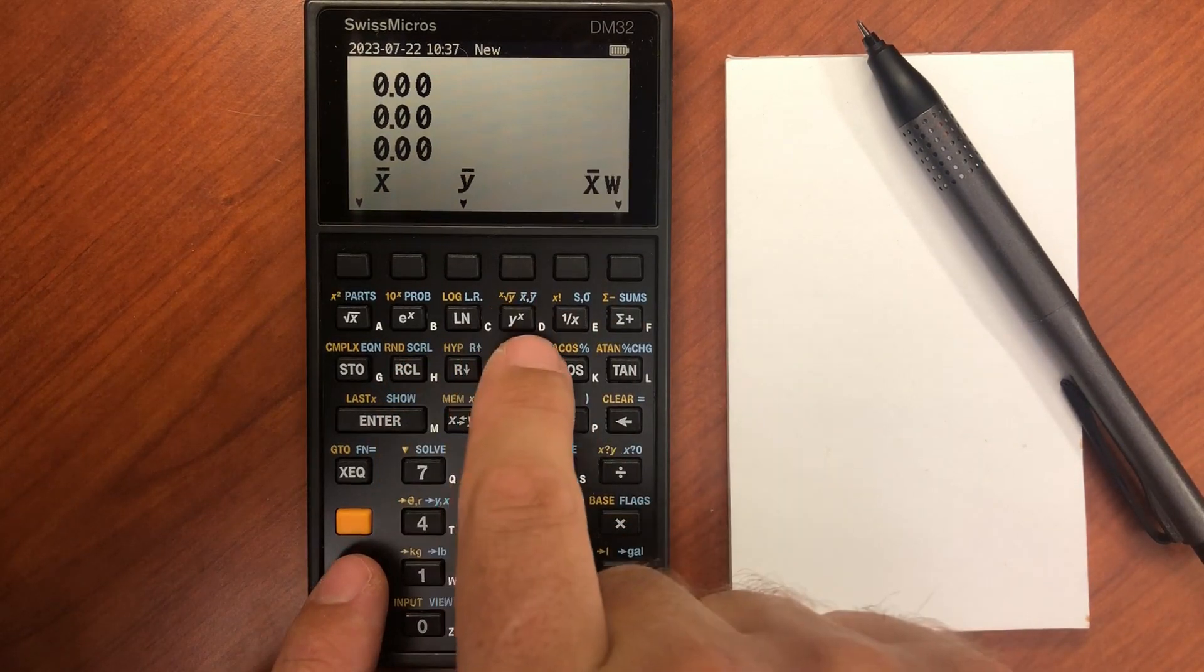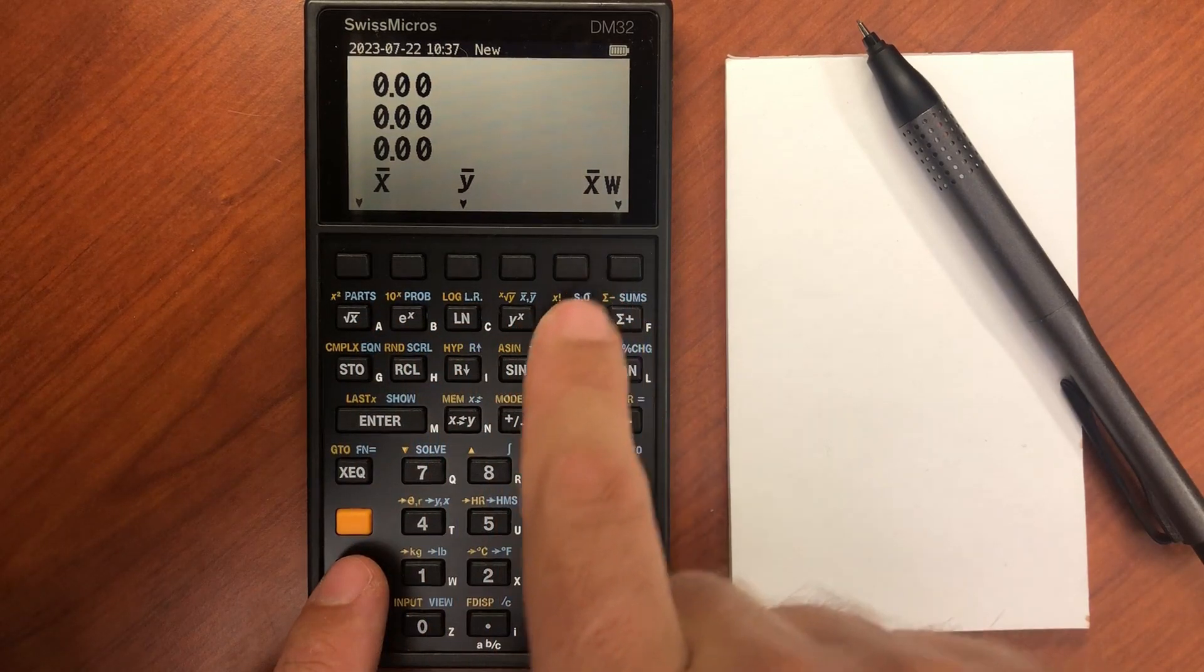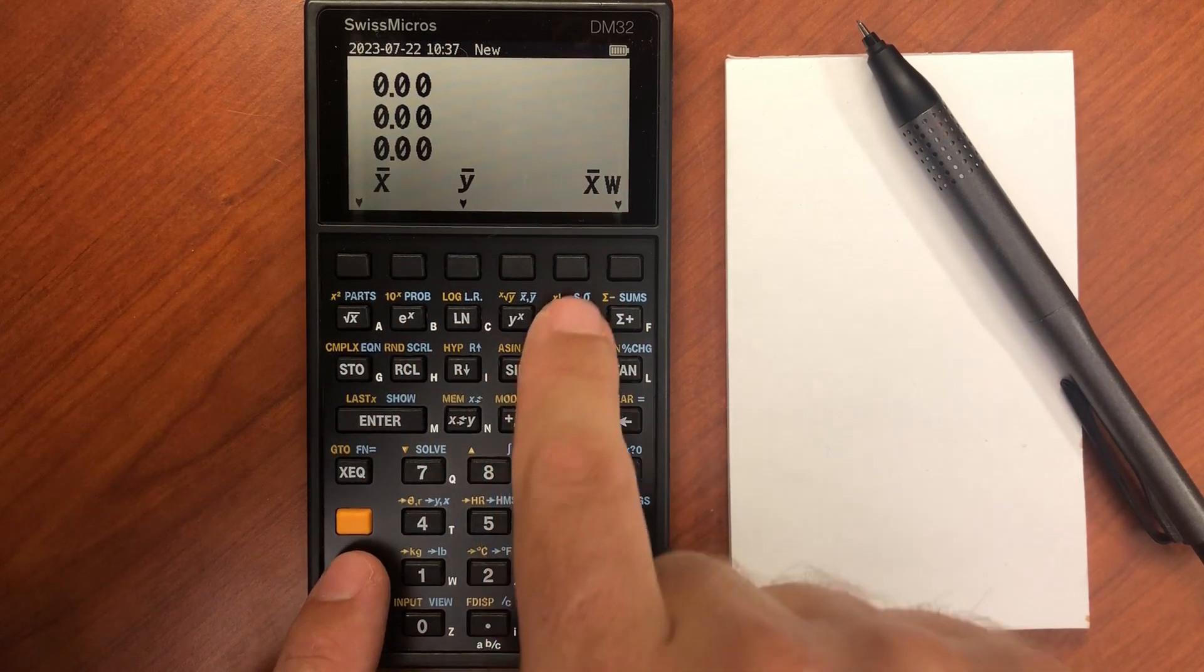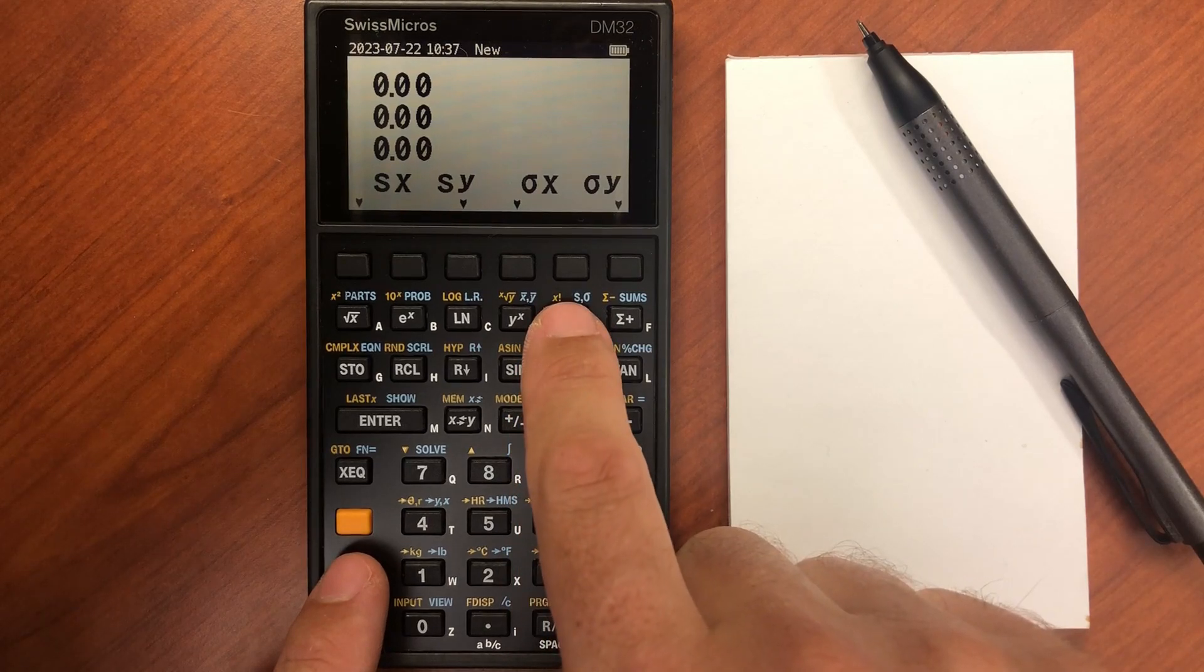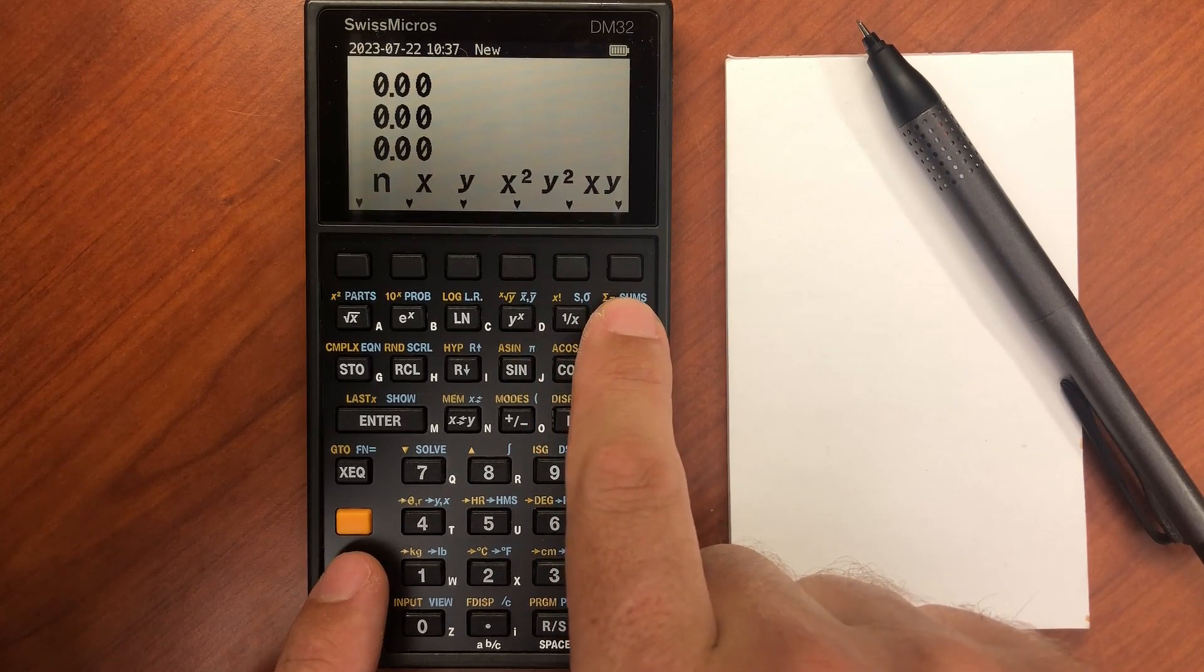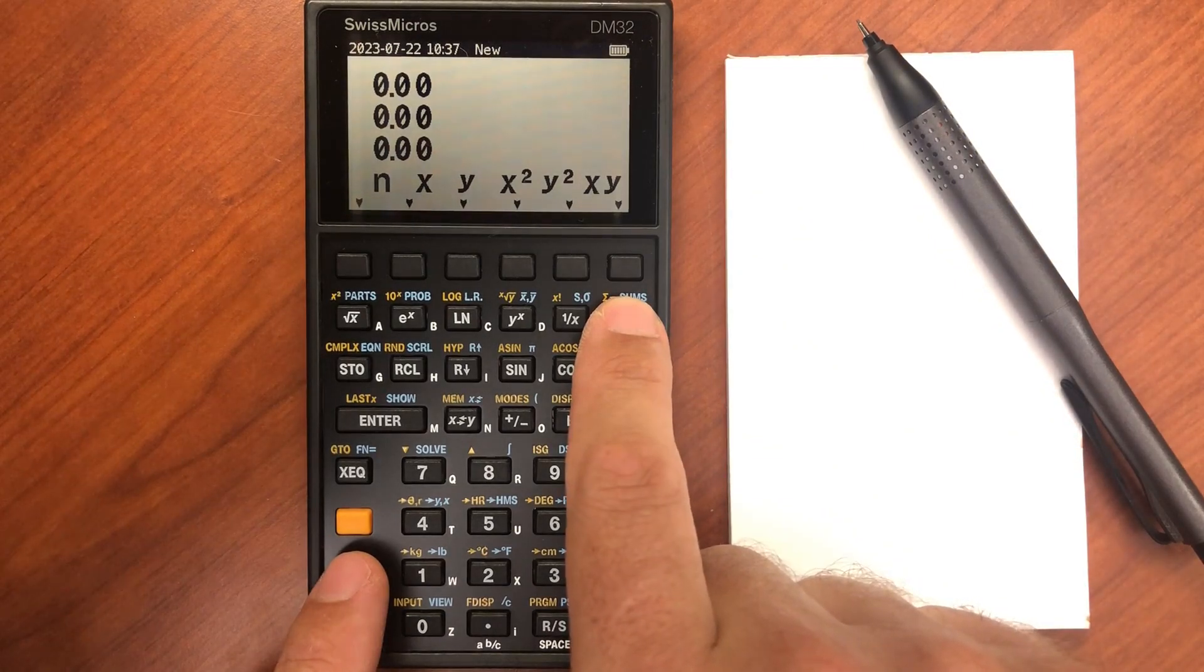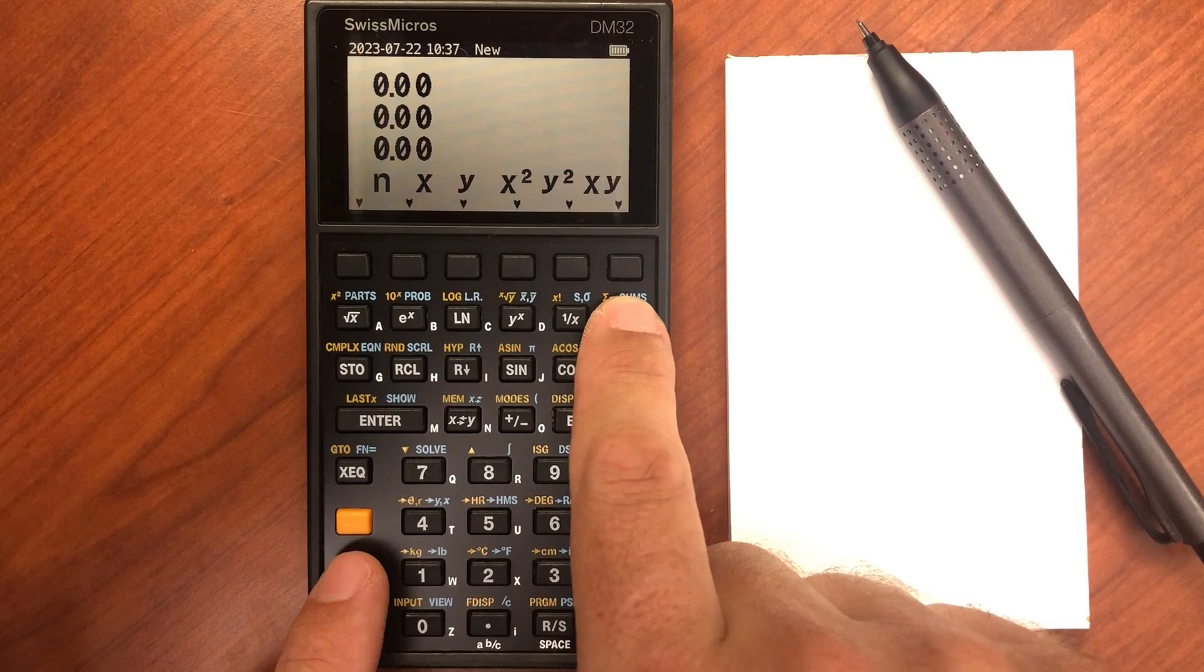We can go to some more statistics menus, so here's the mean of the x, the mean of the y, and the weighted mean. We have the sample standard deviation and the population standard deviation. We have various other statistics in the sums menu, which again we'll cover in the statistics video.